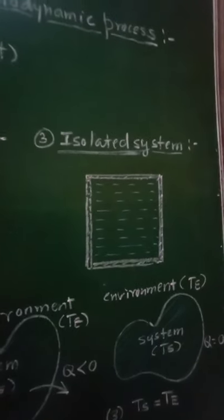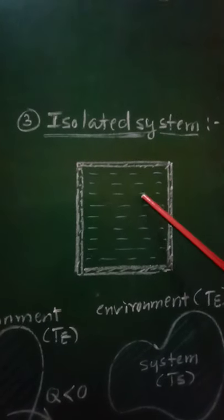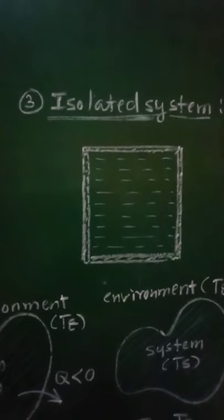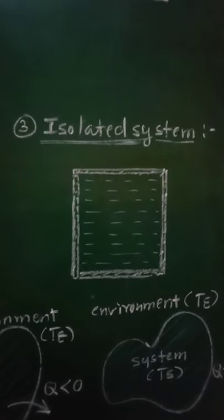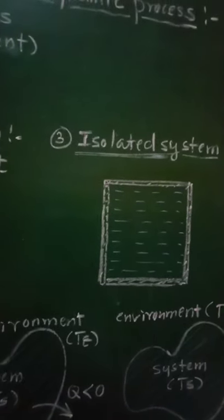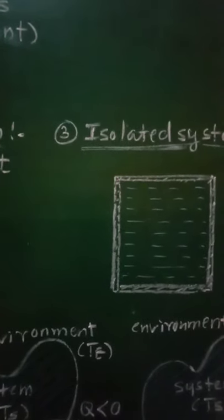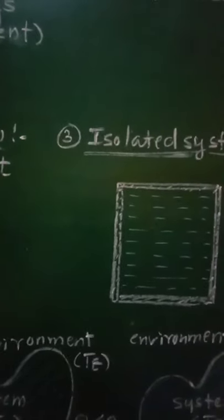Now let us consider the third type: the isolated system. This system will be sealed or kept isolated from its surroundings, and therefore there will be no exchange of heat energy as well as matter. An isolated system is a completely sealed system, isolated from its surroundings, in which matter as well as heat cannot be exchanged with the environment. For example, a thermos flask is an example of an isolated system, because when it is closed, it is isolated from its environment.